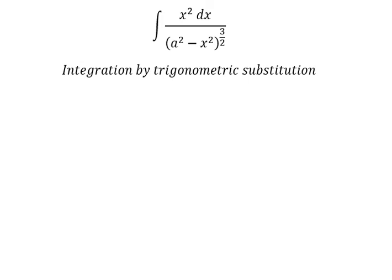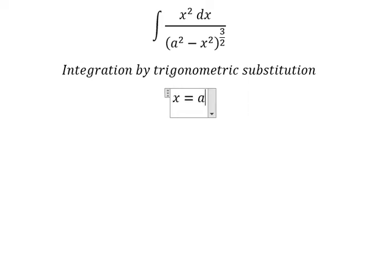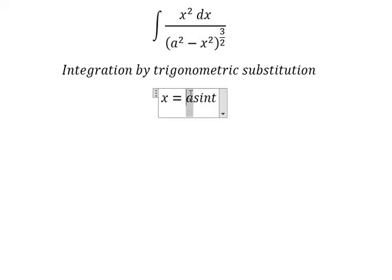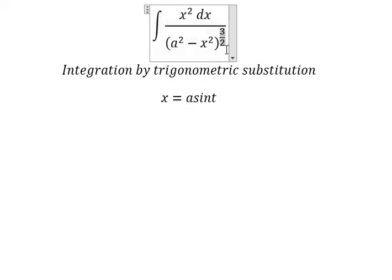I will put x equals to a·sin(t). With this substitution, we get a² - a²·sin²(t). We can do factorization, and one minus sin²(t) we change to cos²(t), and then simplify to the power of 3 over 2.